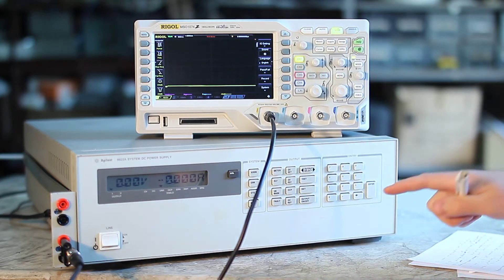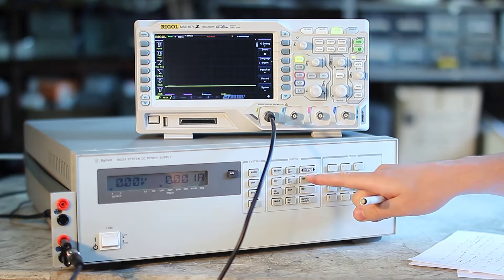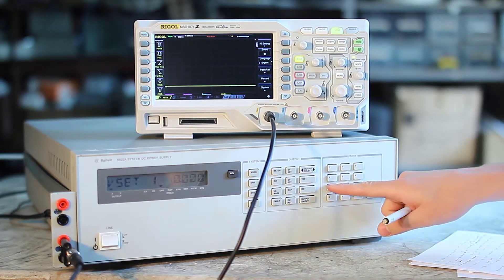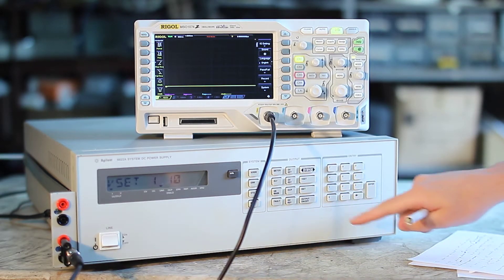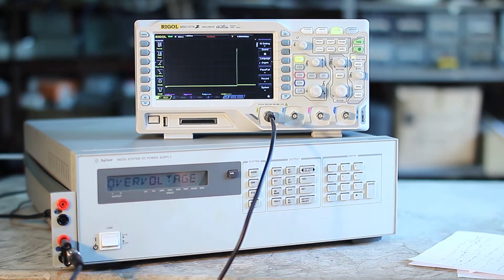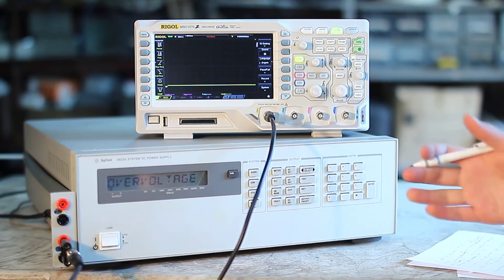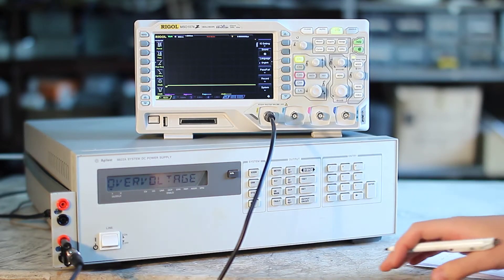However, when a voltage is set to channel 1, the overvoltage protection immediately triggers and disables the channel. On the other hand, the second channel works fine.